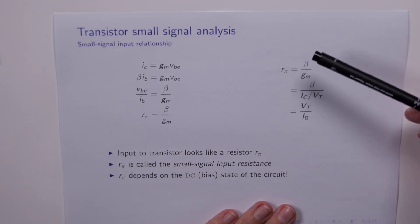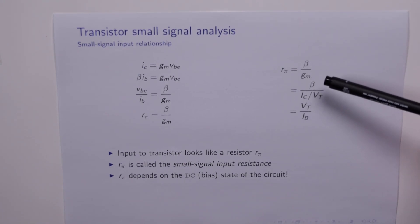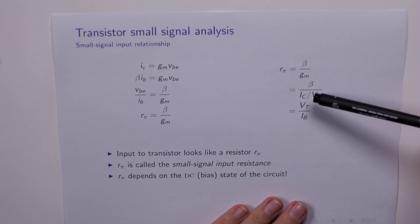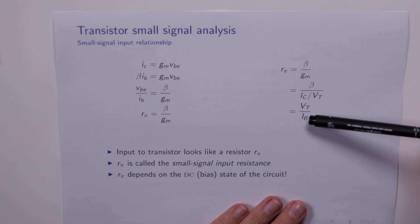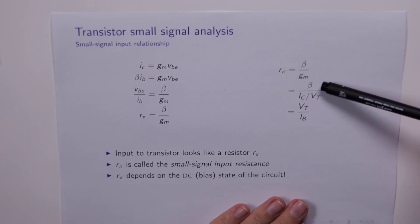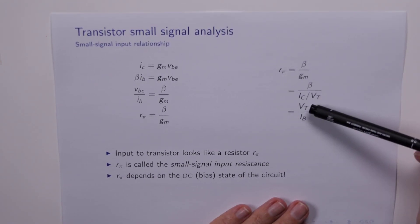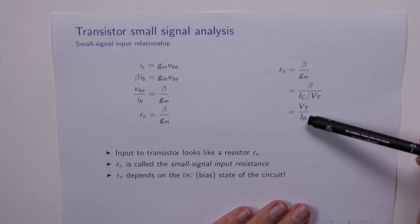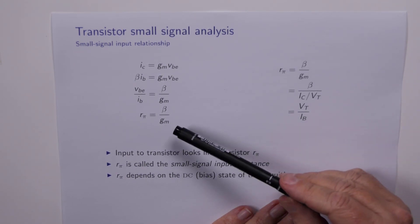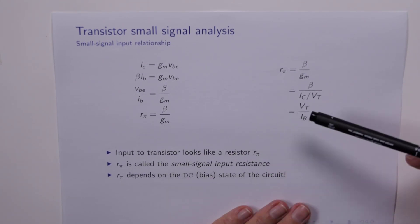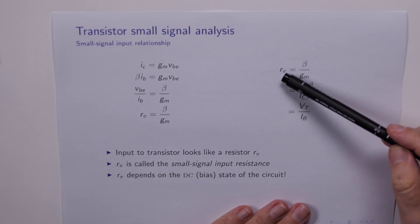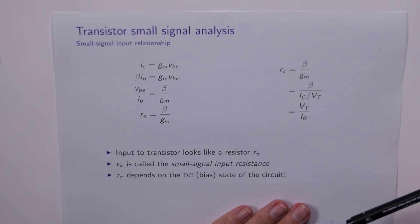Now we can go a bit further. If R pi is equal to beta over GM, GM remember was IC divided by VT. But IC divided by beta is just IB, the DC base current. The VT pops up to the numerator and we're left with this: R pi is the thermal voltage divided by the DC base current, and that's nice and tidy really. So GM remember was the collector current divided by the thermal voltage. R pi is the thermal voltage divided by the base current. And again, R pi depends on the DC state of the circuit, so we cannot calculate R pi until we know what the DC base current is.